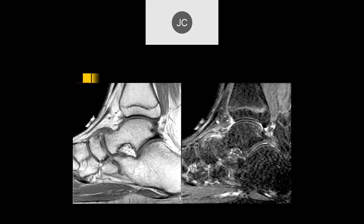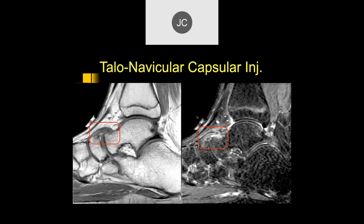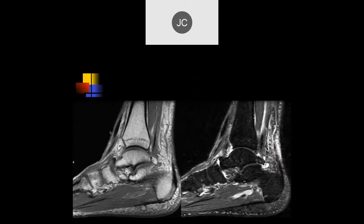Here we're looking at the dorsal talonavicular joint. I see thickening of that capsule and dorsal spurs. As you've seen over and over again, in most adults — especially older individuals — you'll find degenerative changes involving the dorsal talonavicular joint. You can also see this in teenage athletes. It's a very common area of repetitive traumatic injury and a common cause of dorsal pain overlying the anterior ankle and foot.